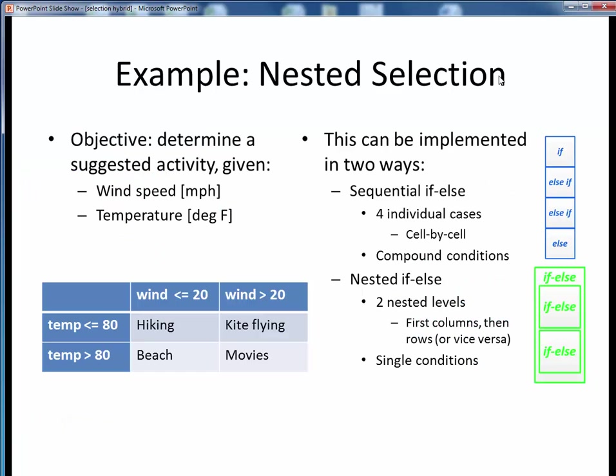Here's another example, this time demonstrating nested selection. What we're trying to do here is determine some suggested activity based on the combination of wind speed and temperature. For two possible regions for each of two parameters, we obviously have four possible combinations to evaluate. In case it isn't obvious in this table, the wind speed is in miles per hour and the temperature is in degrees Fahrenheit.